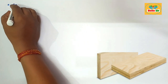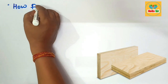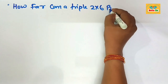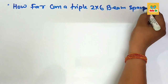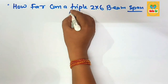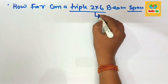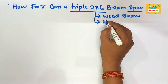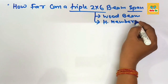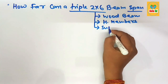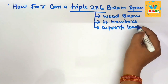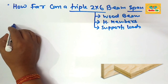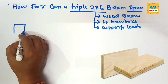Today we're going to learn how far a triple 2 by 6 beam can span. We need to figure out the maximum span length for a triple 2 by 6 wood beam. A beam is a horizontal member in a roof framing system that supports load coming from the roof and floor area.